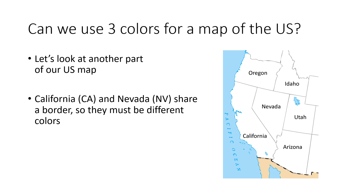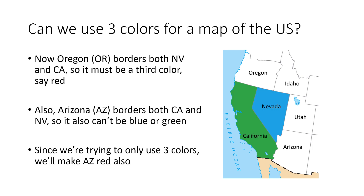Let's look at a different part of the map — some states on the western United States. California and Nevada share a border, so Nevada and California have to be different colors. I've shaded Nevada blue and California green. Oregon shares a border with California, so it can't be green. Nevada shares a border with Oregon, so Oregon also can't be blue. So Oregon has to be some third color — let's say red.